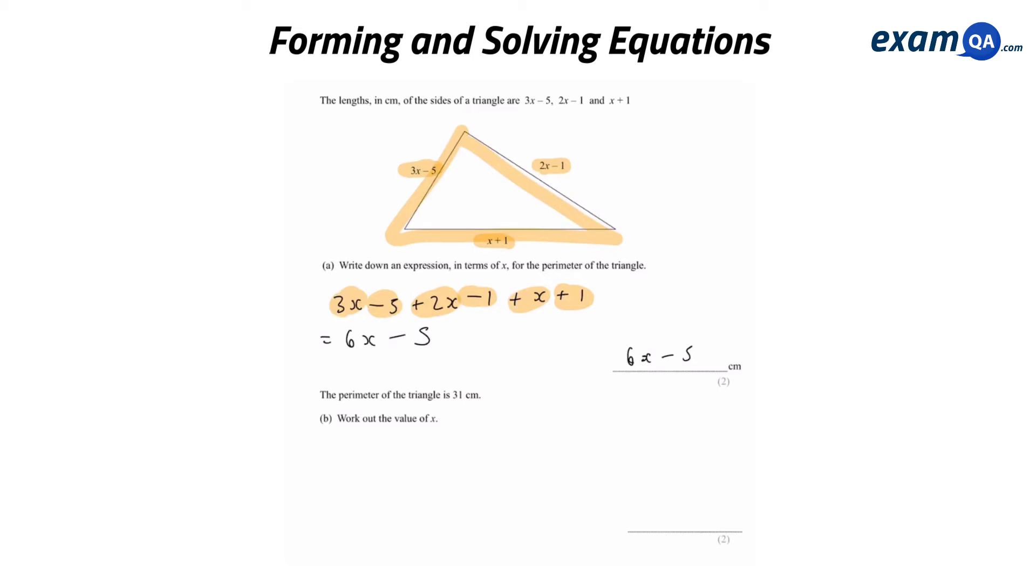Part B. The perimeter is 31 centimeters. Work out the value of x. So here they've given us a bit more information. They said the perimeter is 31. Well, in Part A, we just worked out the perimeter is 6x minus 5. So doesn't that mean 6x minus 5 equals 31? Here we form an equation, which we just need to solve.